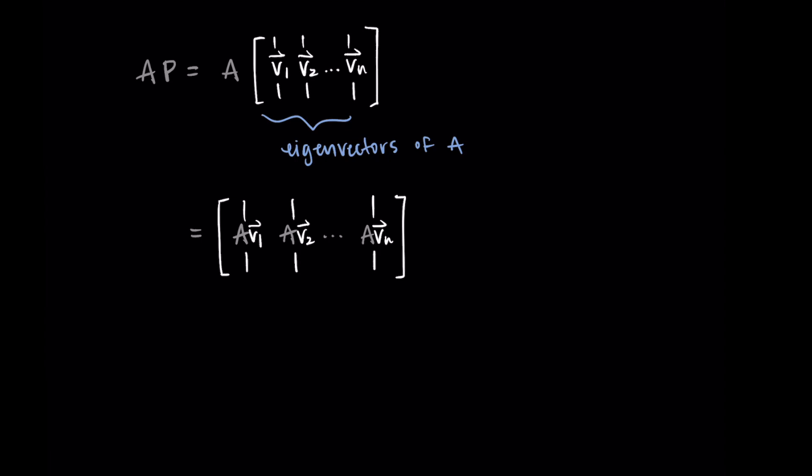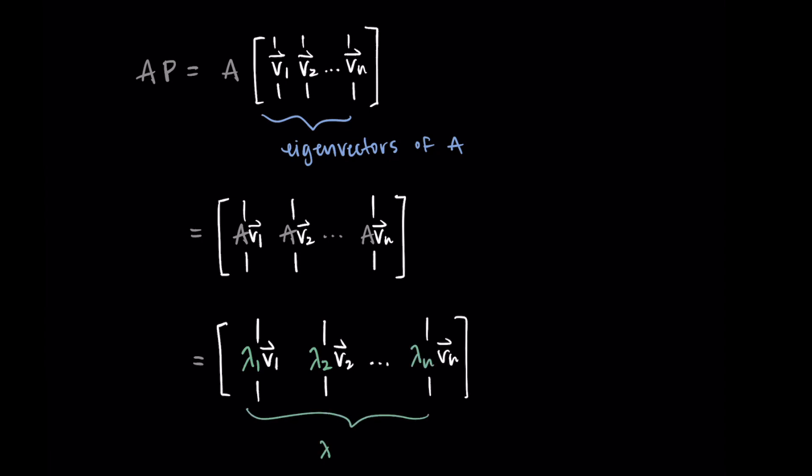The reason we look at it this way is because eigenvectors have a special property: when we take A and multiply by an eigenvector, we get lambda times that vector. So instead of writing A times the eigenvector, we write lambda times the eigenvector. The first column becomes lambda 1 V1, the second lambda 2 V2, all the way through lambda n Vn, where these lambdas are the eigenvalues of A. So A times the matrix of eigenvectors equals the matrix where each eigenvalue scales its corresponding eigenvector.